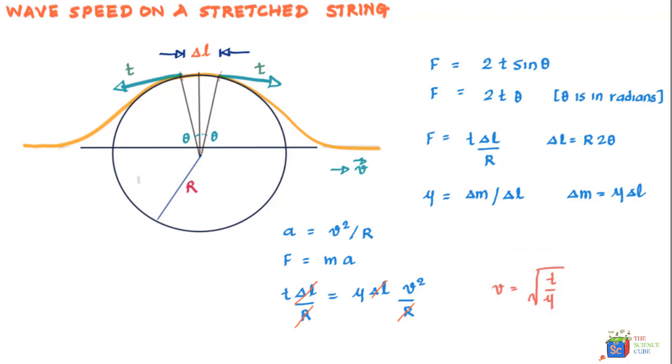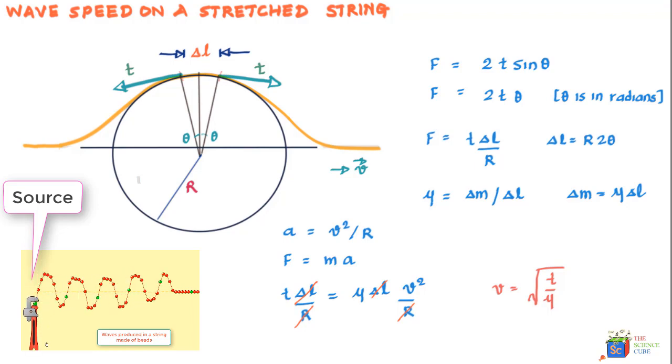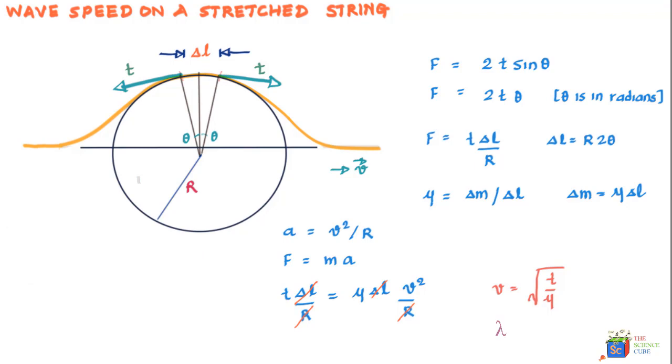Number two, the velocity of any string made of same material under similar tension will have the same velocity. The third observation is that the frequency of the wave is actually fixed by the source creating the waves—it could be you if you are shaking the string or any mechanical device. Another conclusion: wavelength λ is therefore fixed as v / f.